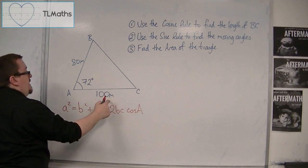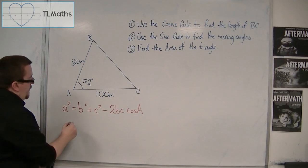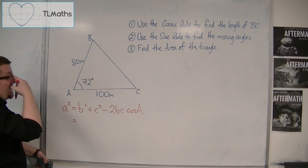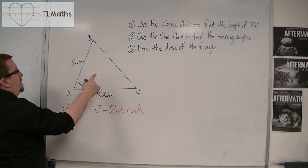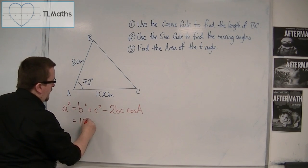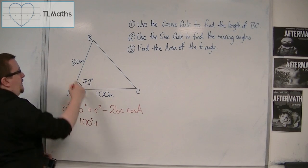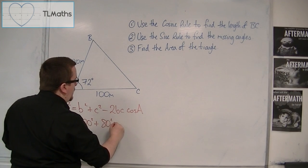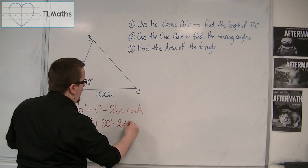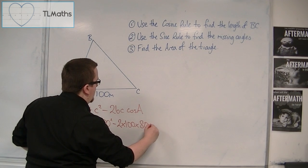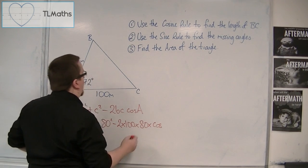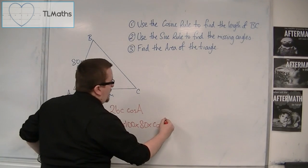This would be the little b, and this would be little c. So, a squared is equal to b squared, so 100 squared, plus c squared, so 80 squared, minus 2 times 100 times 80 times cosine of a, the angle, 72 degrees.